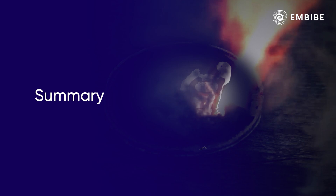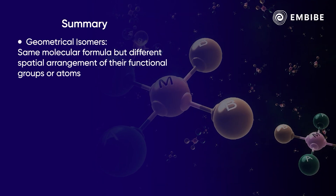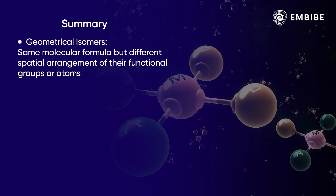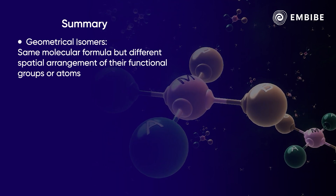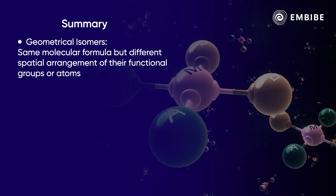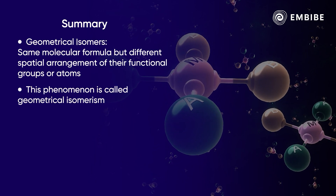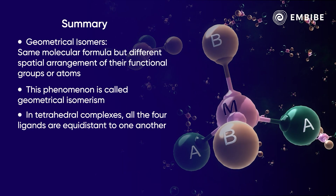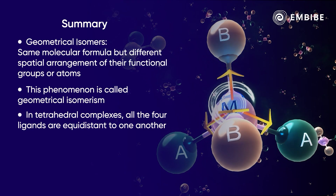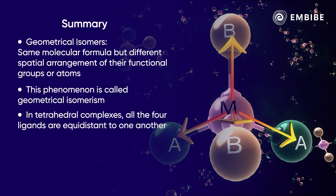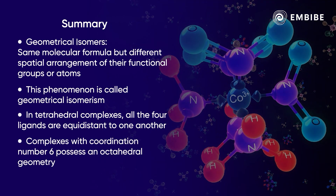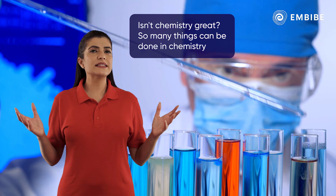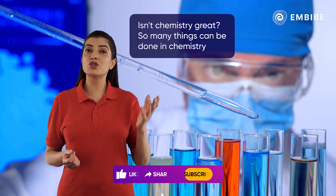To summarize: compounds having the same molecular formula but differing in the spatial arrangement of their functional groups or atoms are called geometrical isomers, and the phenomenon is called geometrical isomerism. In tetrahedral complexes, all four ligands are equidistant to one another, so no isomerism occurs. Complexes with coordination number six possess an octahedral geometry.